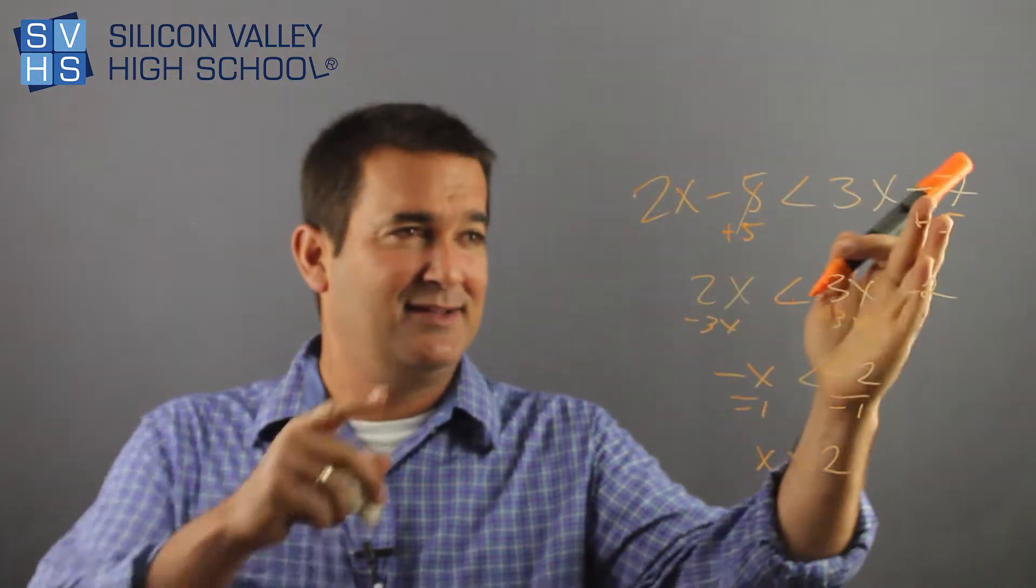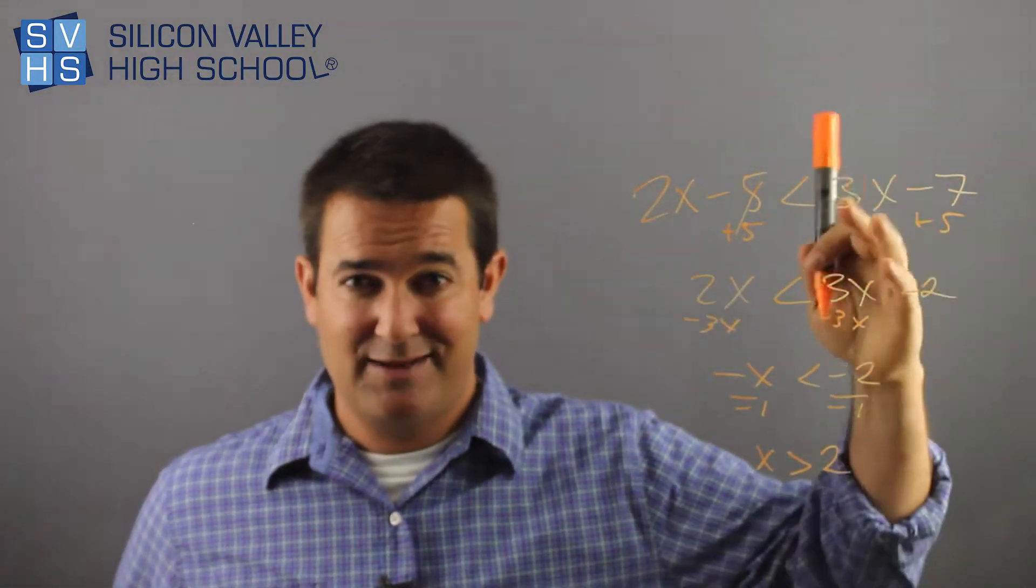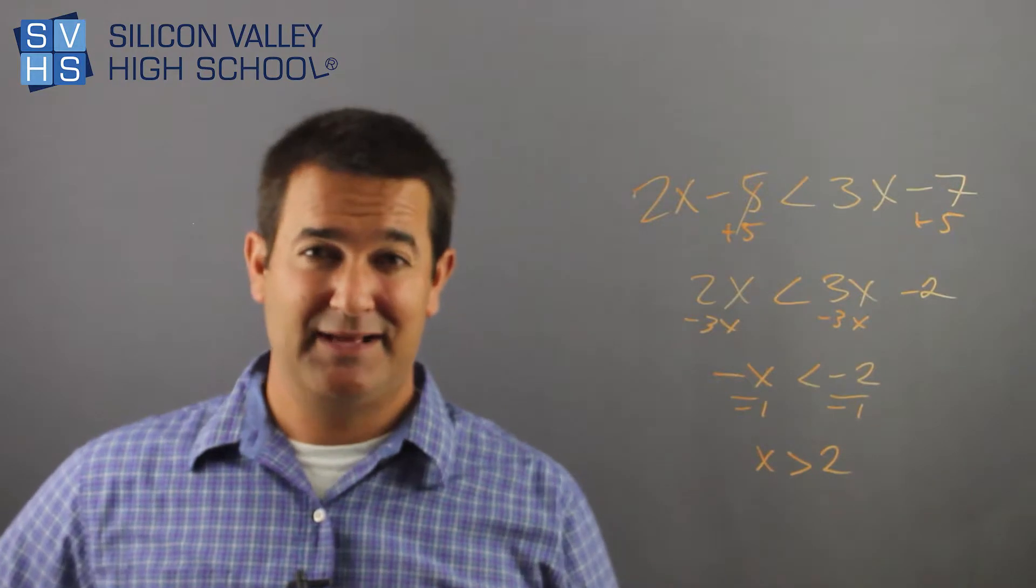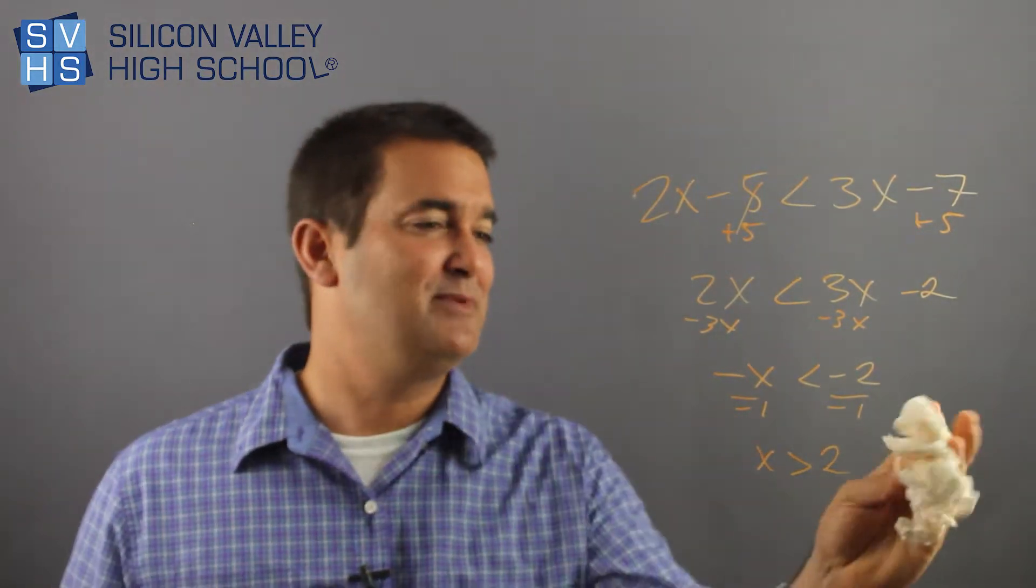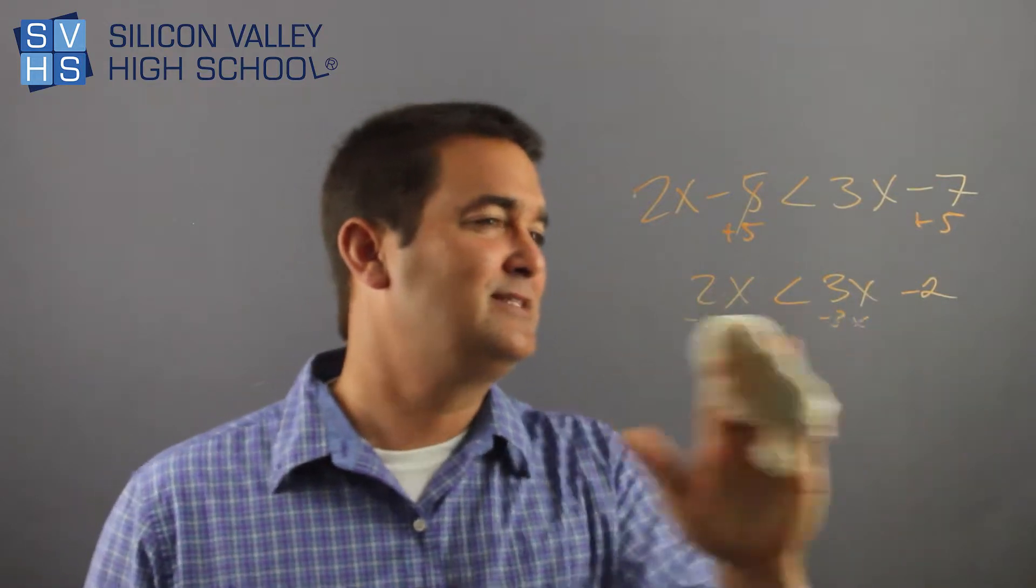Interestingly, if I had done this, where I move my x's to the right and my numbers to left, I still would have got the same answer. X would be bigger than 2. So that's the key. Honestly, besides dividing by negative, there's nothing totally novel about these. So I wouldn't stress if I was you.